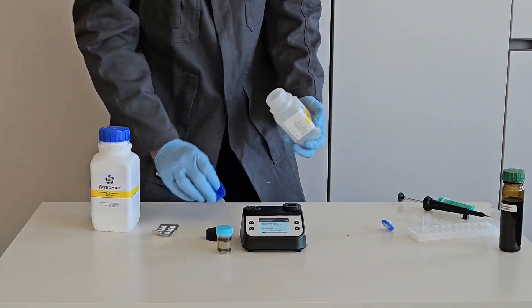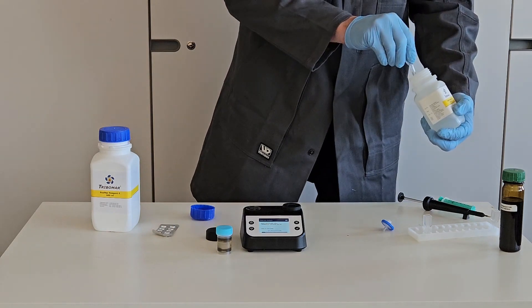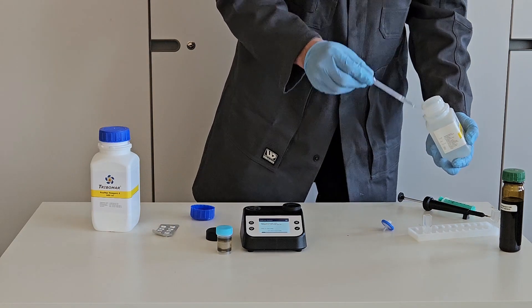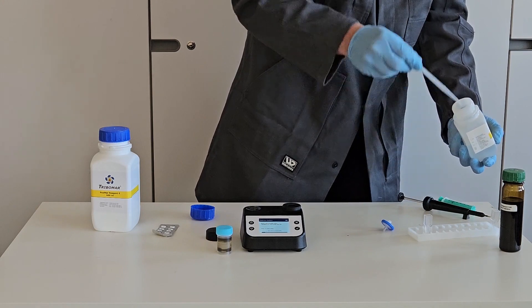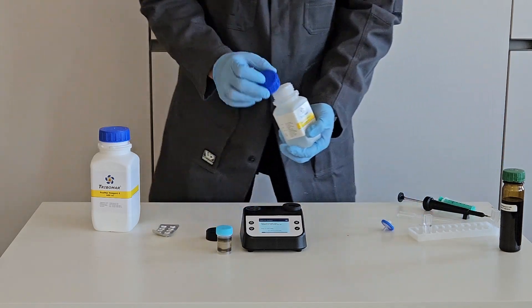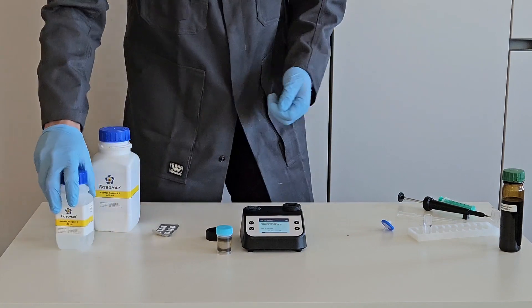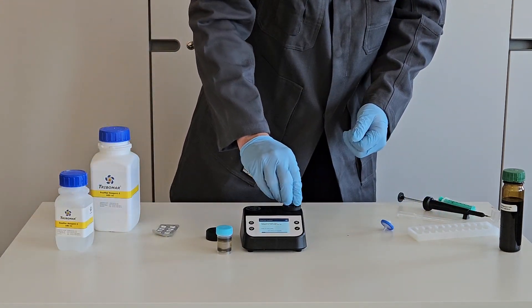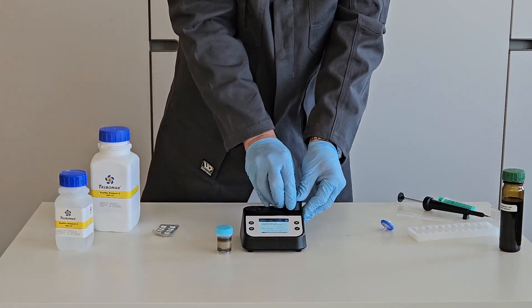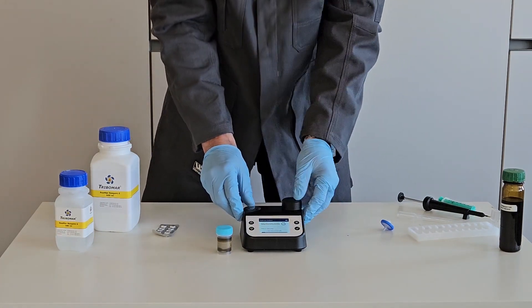Starting with the self calibration. Fill a cuvette with 2 ml reagent S. Put the cuvette into the holder and close the lid. This needs to be done only at the start once.